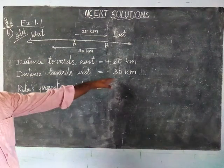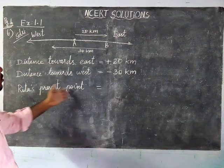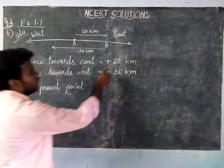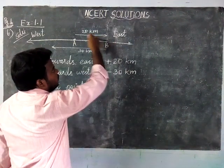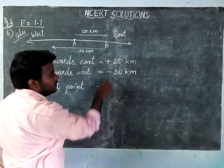So now Ritu's present point. Listen carefully. He moved east side 20, again he came to west side 30 km, that is minus 30. So now we are going to find the difference.